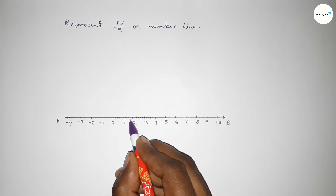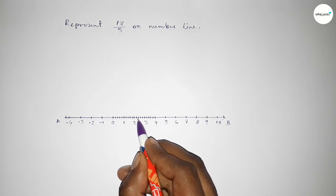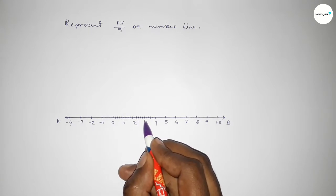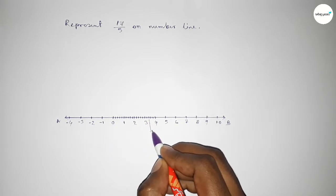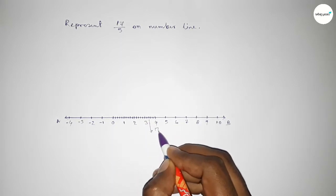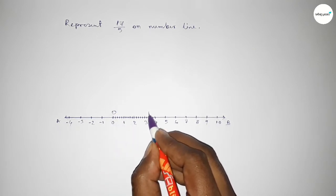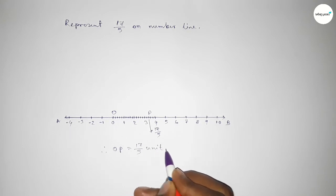7 over 5, 8 over 5, 9 over 5, 10 over 5, 11 over 5, 12 over 5, 13 over 5, 14 over 5, 15 over 5, 16 over 5, and this is 17 over 5 on the number line. This is O and P, so therefore OP equals 17 over 5 units. That's all — thanks for watching. If this video is helpful to you, please share it.